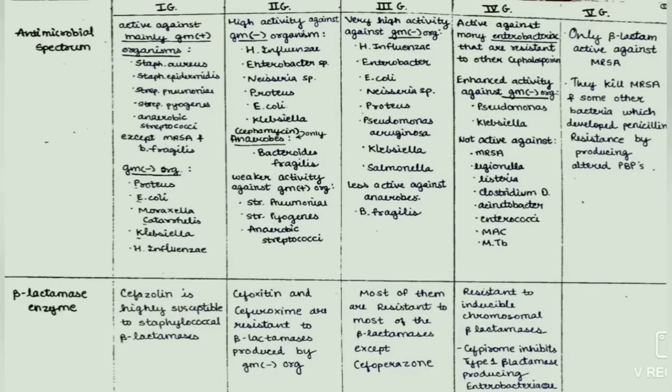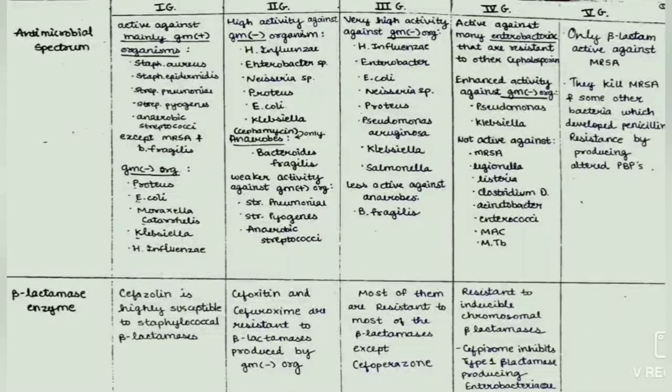Regarding beta-lactamase susceptibility: first generation cephalosporins are highly susceptible to staphylococcal beta-lactamases. From the second generation, cefoxitin and cefuroxime are resistant to beta-lactamases produced by gram-negative organisms. From the third generation, most are resistant to most beta-lactamases, except cefoperazone. Fourth generation cephalosporins are resistant to inducible chromosomal beta-lactamases, and cefpirome inhibits type 1 beta-lactamase-producing Enterobacteriaceae.